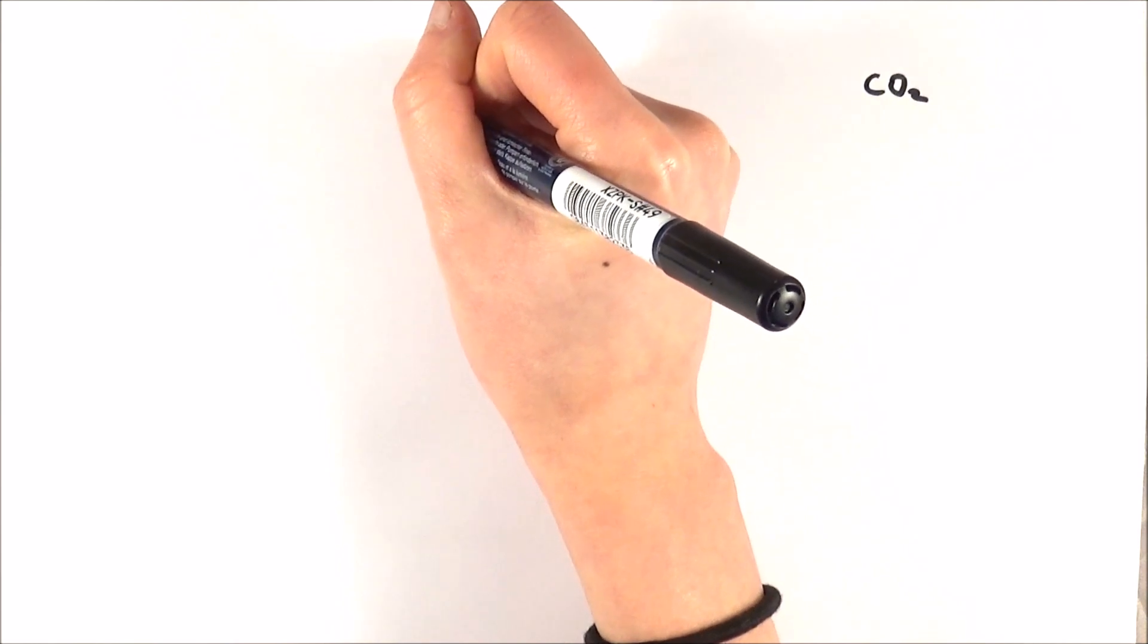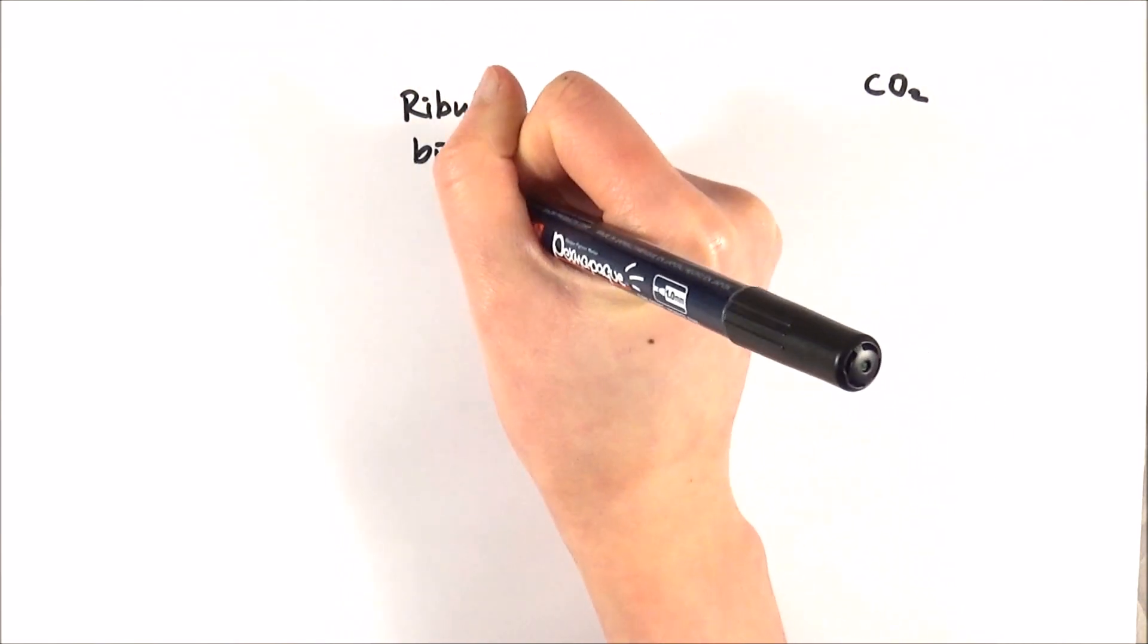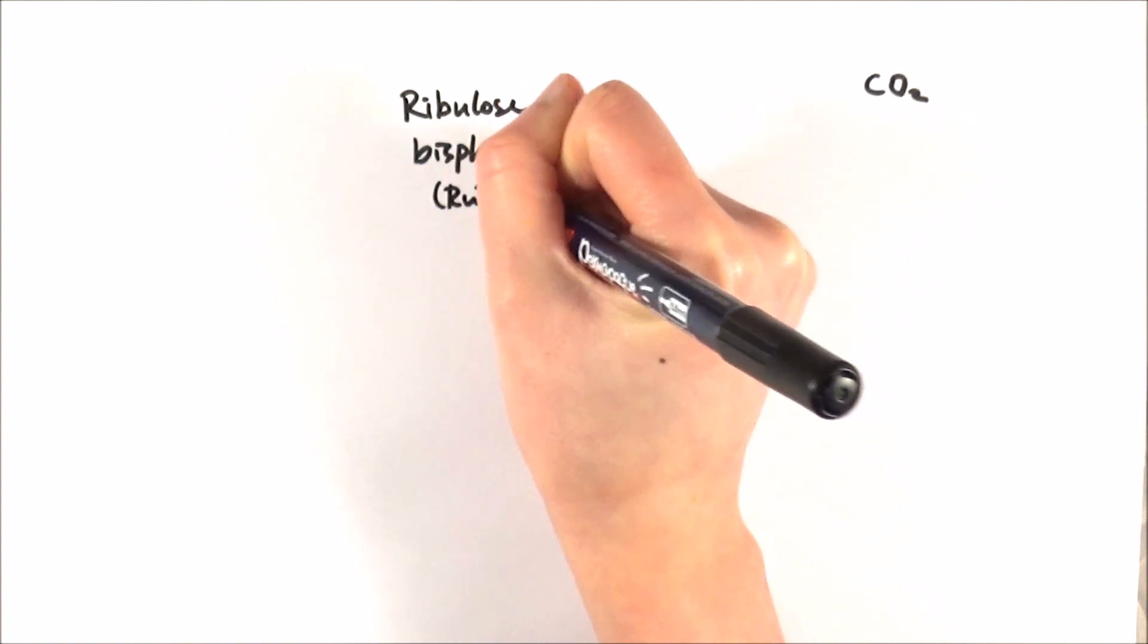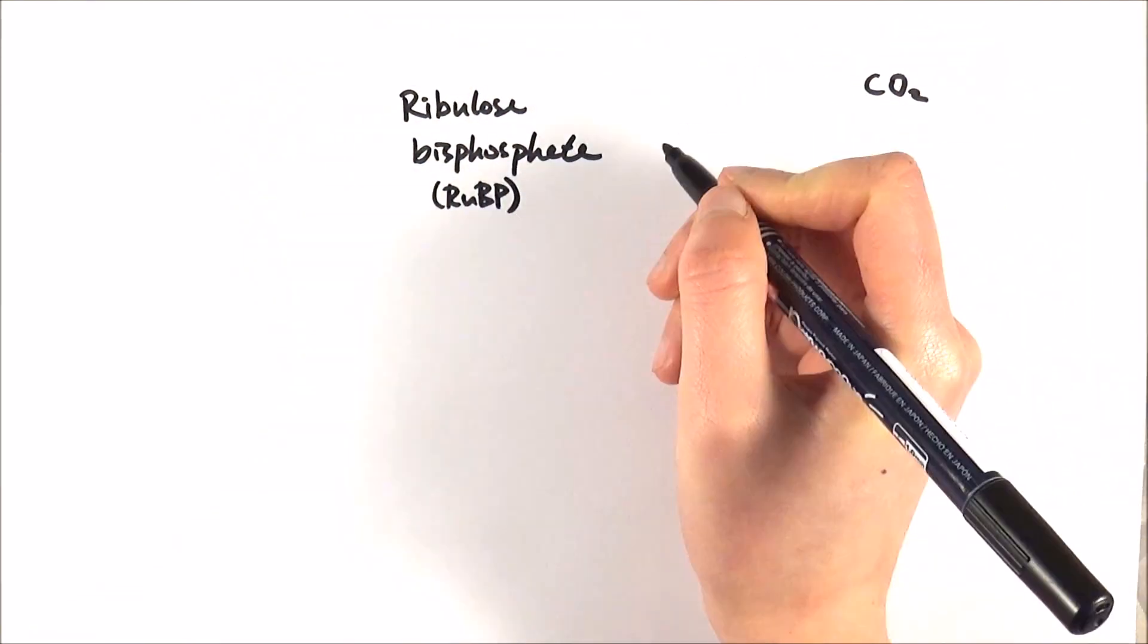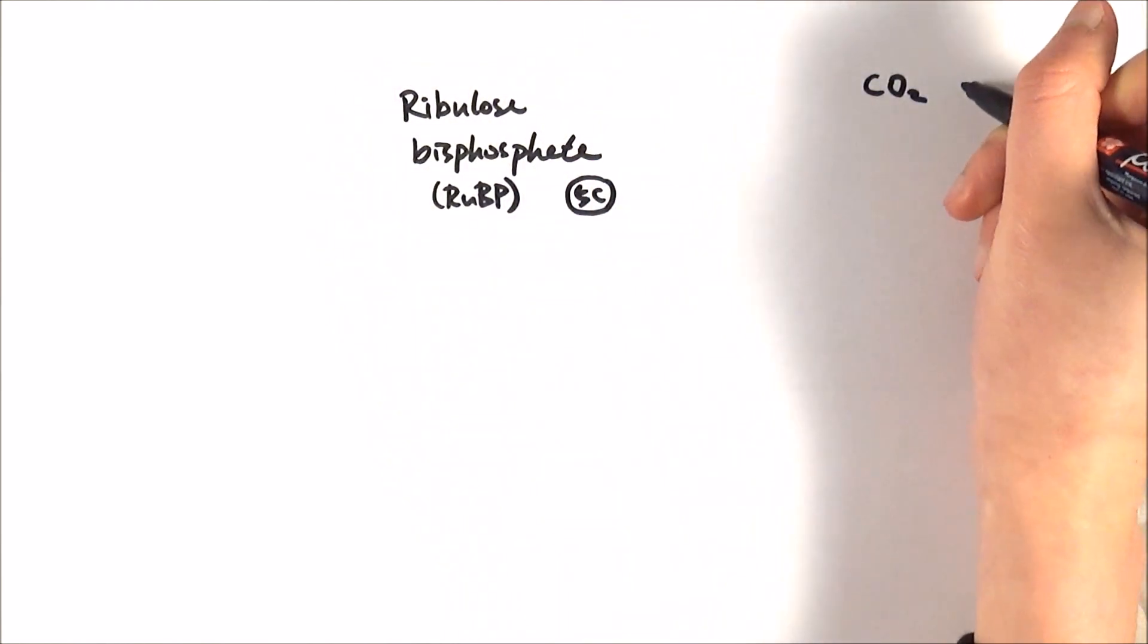Now carbon dioxide here will combine with a chemical called ribulose bisphosphate, and we can call it RuBP as the short form. Ribulose bisphosphate has five carbons in it, and carbon dioxide, as you know, only has one carbon with it.